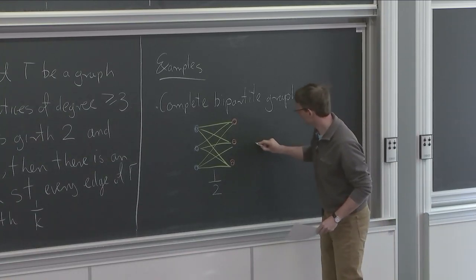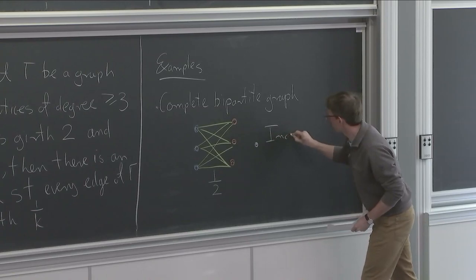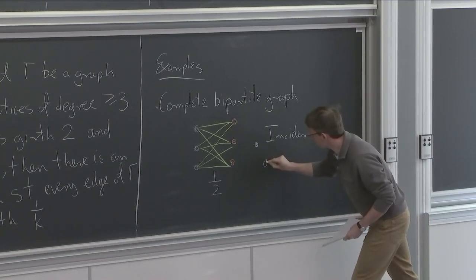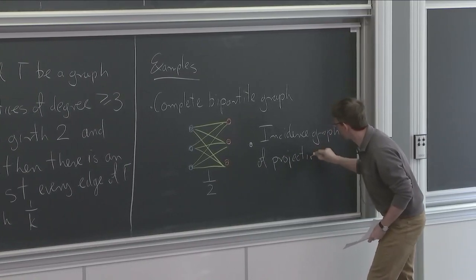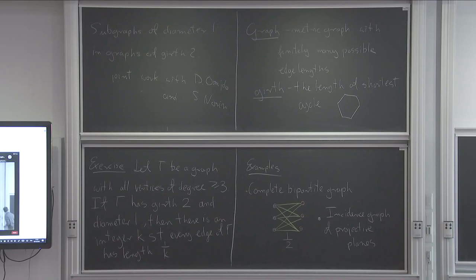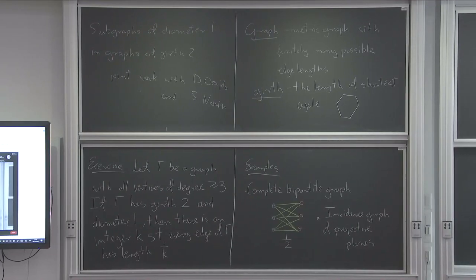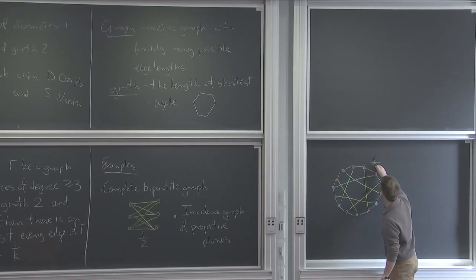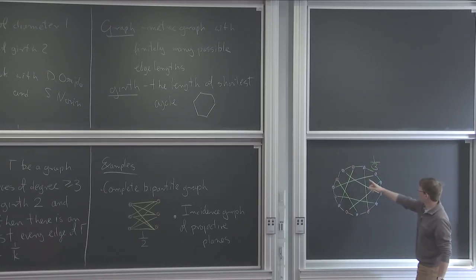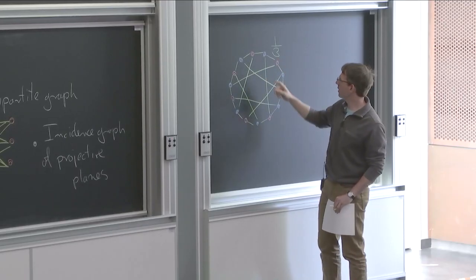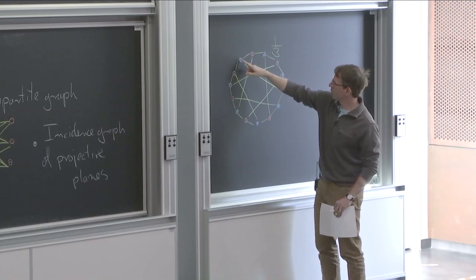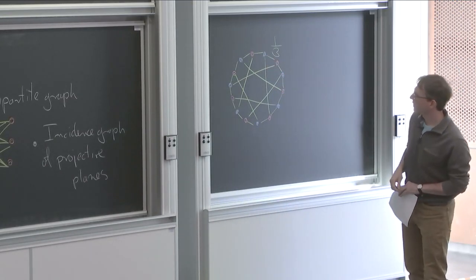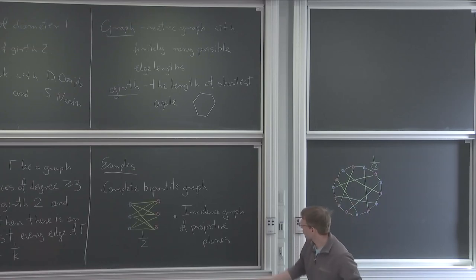Another example would be the incidence graph of projective planes. Again, you have a bunch of red vertices and a bunch of blue vertices. Each edge now has length one third. The shortest cycles are hexagons, so they have length exactly 2. And the shortest path between any two vertices is at most combinatorial length 3, so metrically 1. These are examples of graphs to which this exercise applies.